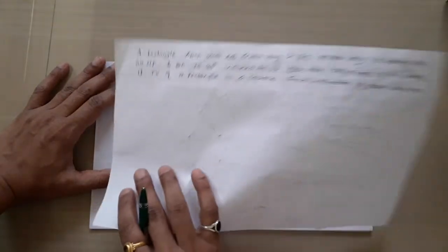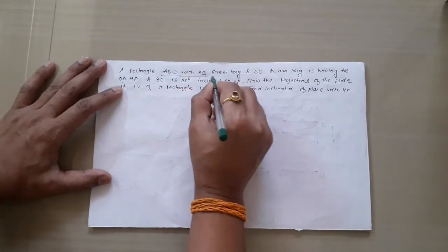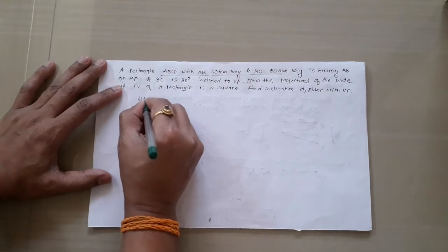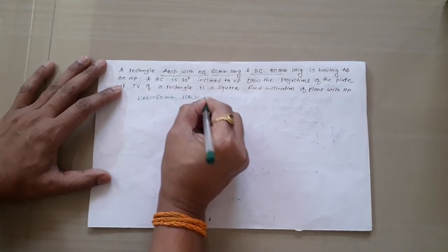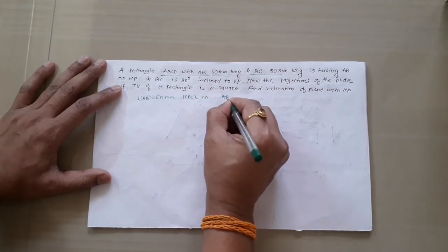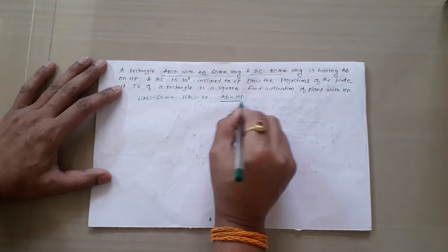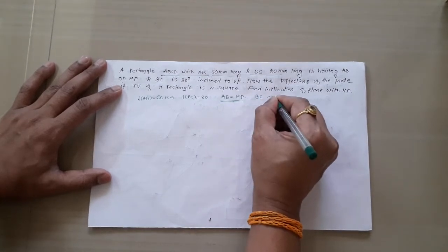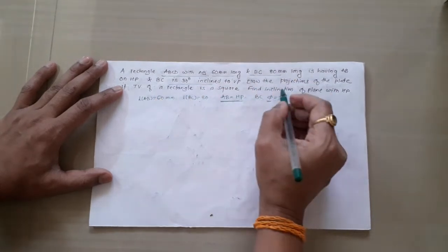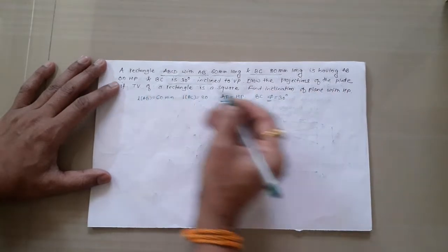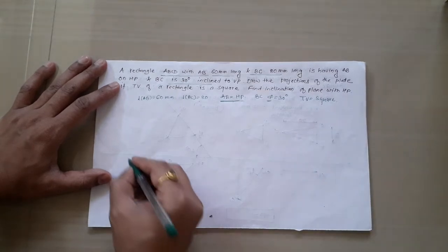Now we discuss the second problem of the same type — Type 3. The given data is: a rectangle with AB = 60mm, BC = 80mm. AB is on HP, meaning the front view of AB will lie on the reference line, so that side is taken perpendicular to XY in the top view. BC is inclined to VP by 30 degrees (Phi = 30°). The top view of the rectangle appears as a square.